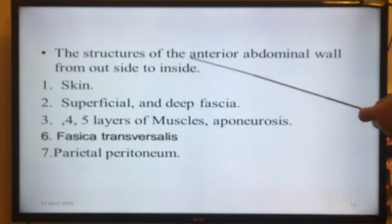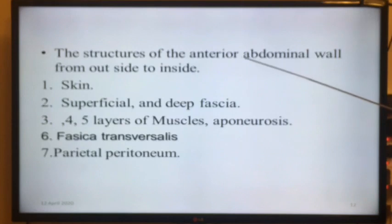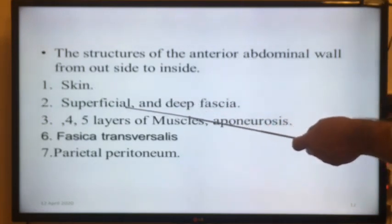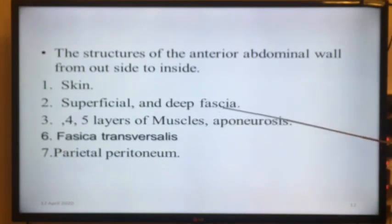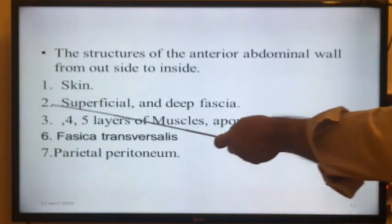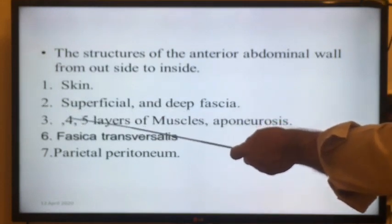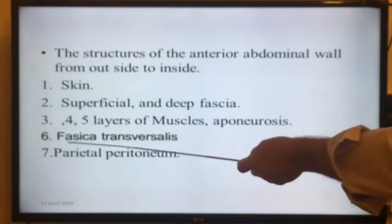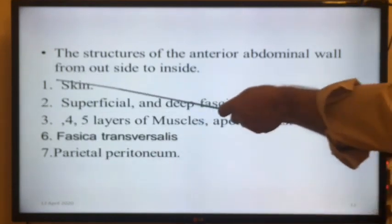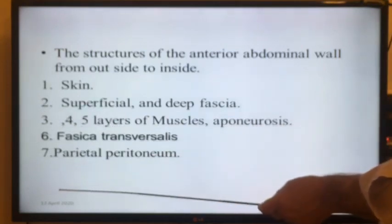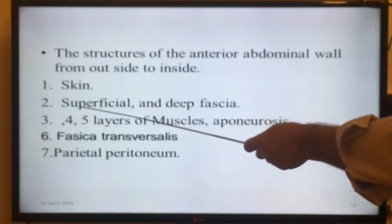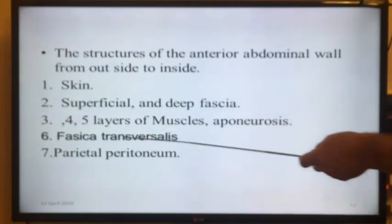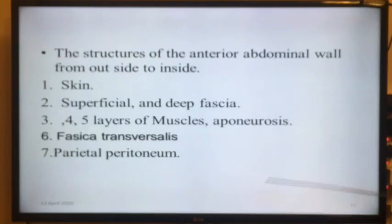What are the structures found in the anterior abdominal wall? They are: skin; superficial and deep fascia; then muscles at layers three, four, and five; then fascia transversalis; and parietal peritoneum. So there are seven layers in total.